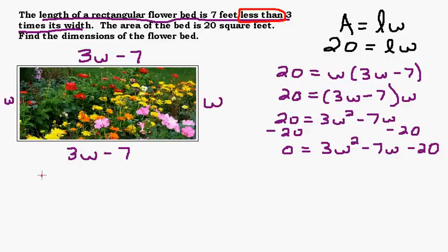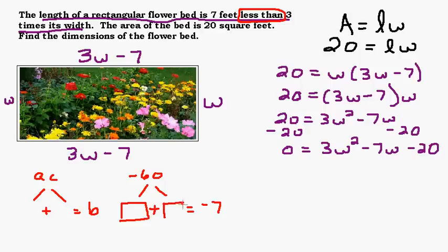So our a value is 3. Remember the AC method? We're going to set up a little thing like this and figure out what multiplies to be a times c and adds to be b. So our a is 3 and our c is negative 20. So a times c would be negative 60. So we have to figure out what multiplies to be negative 60 and adds to be b, which is negative 7. Now if you want to, it might be a good idea to stop the video and see if you can figure it out. It's good practice to do that. And then just start the video again.